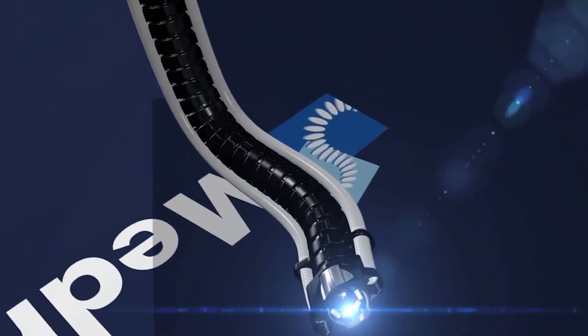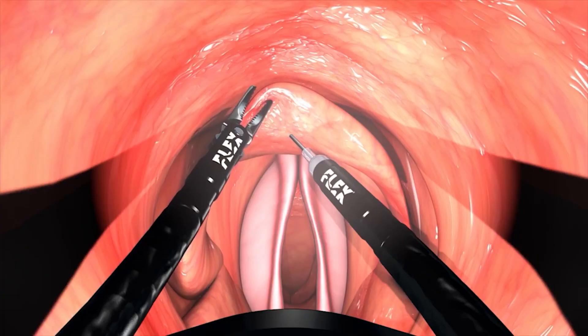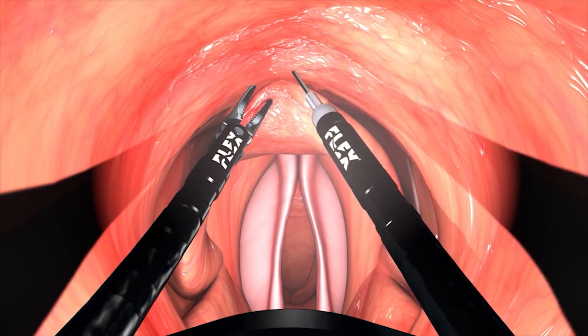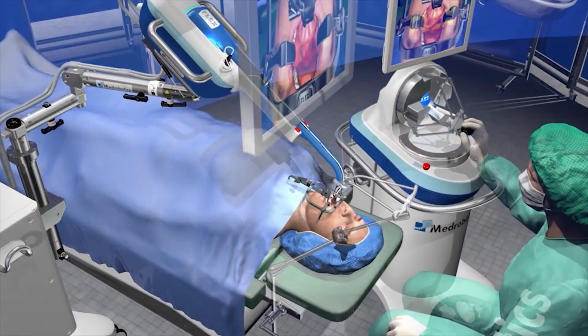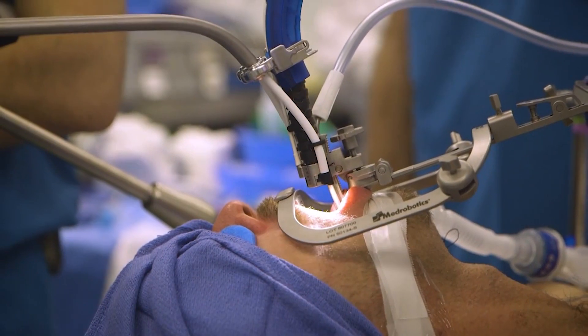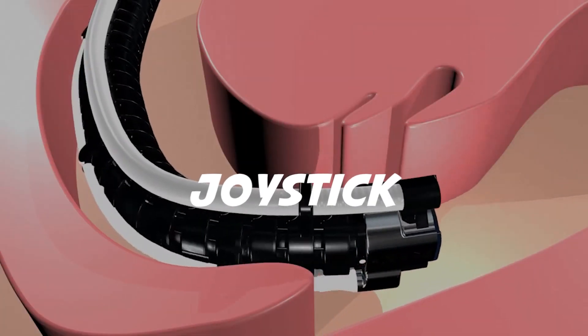The physician controls the snake's movements via a video game-like joystick. Once in place, the Flex can become rigid, allowing a surgeon to pass through an instrument which can cut or cauterize. The instruments are also controlled robotically by the joystick.